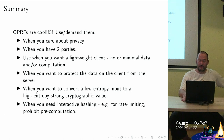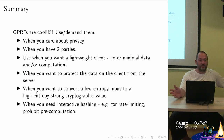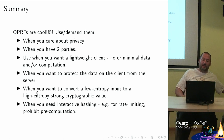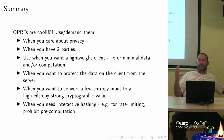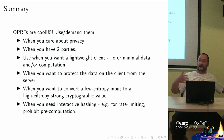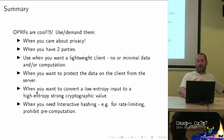In summary: OPRFs are super cool. Use them when you care about privacy and have at least two parties, when you want minimal client-side computation, minimal data transfer, or to isolate data between server and client. They're very useful for low-entropy inputs like passwords that you want to convert into high-entropy cryptographic keys, and for interactive hashing where you want rate limiting or to prohibit pre-computation — preventing rainbow table attacks when a database is stolen.